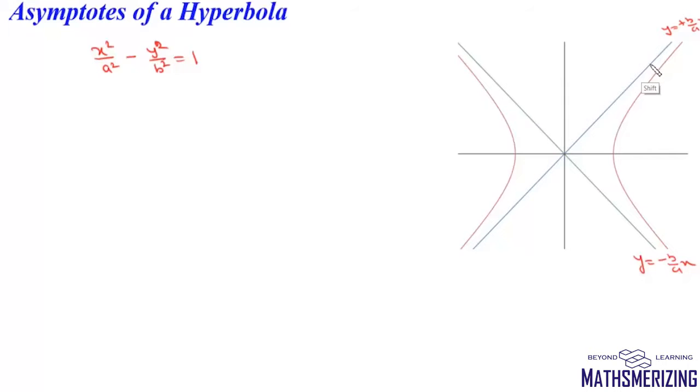We will draw the double ordinate, this is P, N, and P', and it is extended to meet the asymptotes at Q and Q'.